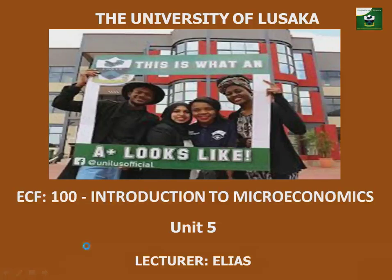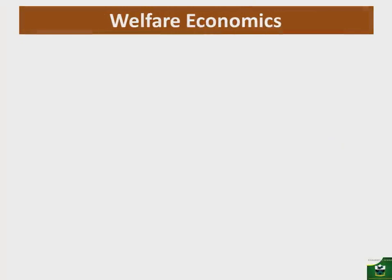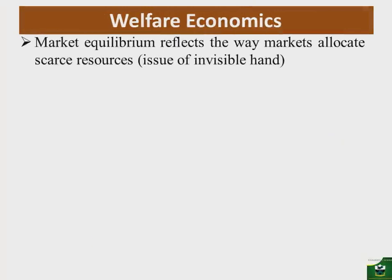Let's start by looking at welfare economics. Market equilibrium reflects the way markets allocate scarce resources — the issues of the invisible hand. You should note that in a market or in a society, resources are limited whereas our wants are unlimited. It is this problem that forces us to make choices.